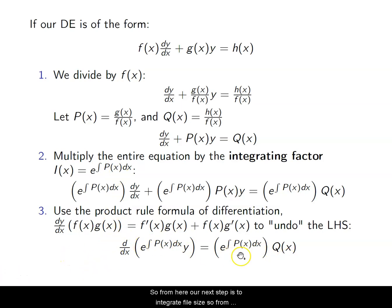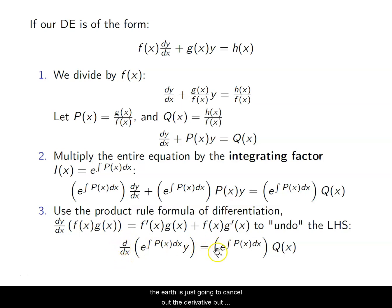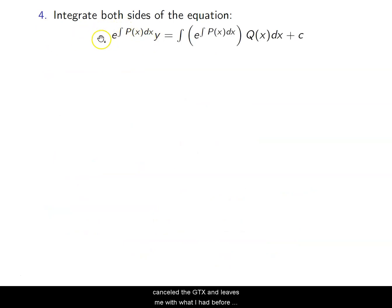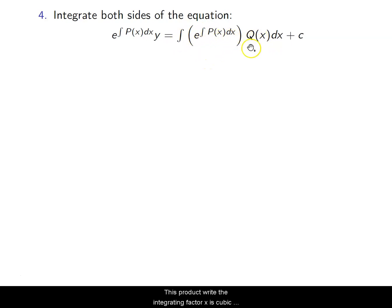Our next step is to integrate both sides. From the fundamental theorem of calculus, the integral of the derivative cancels the derivative on the left side. On the right-hand side, we integrate the integrating factor times Q(X) with respect to X, which gives us a constant of integration as well.